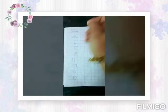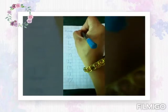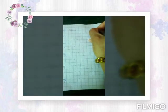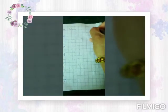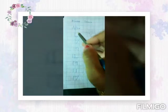Hi children, today we are going to learn to write what comes after in maths copy. First you will write your name here like this. Then you will put the date here 3.9.20. Now children will learn what comes after.